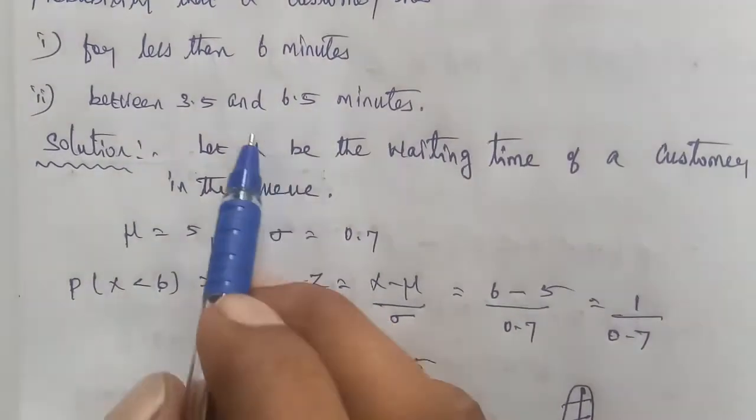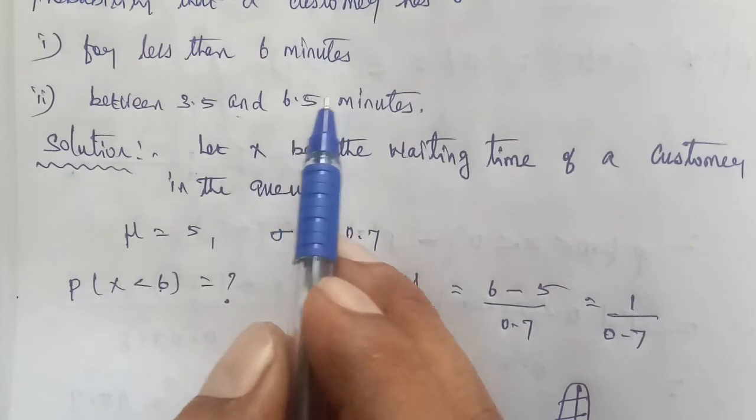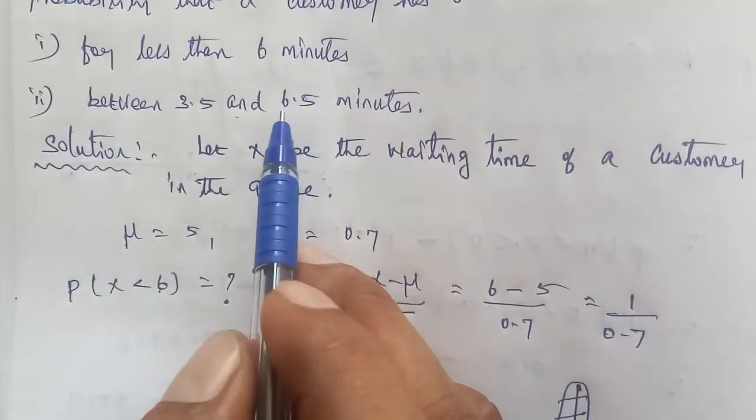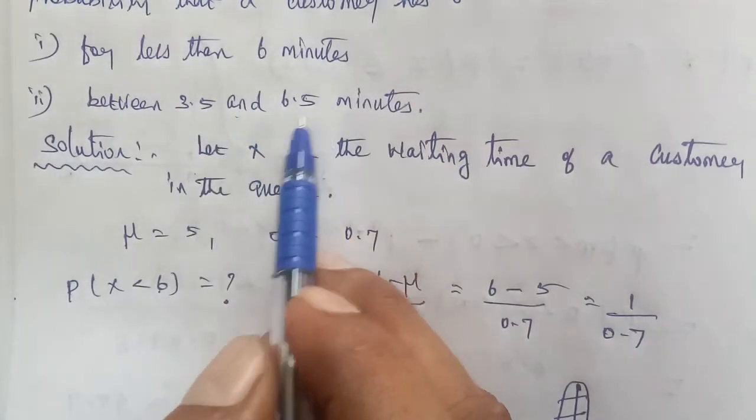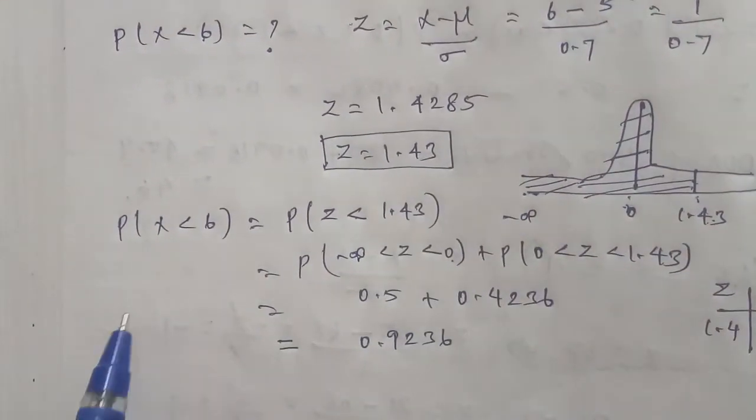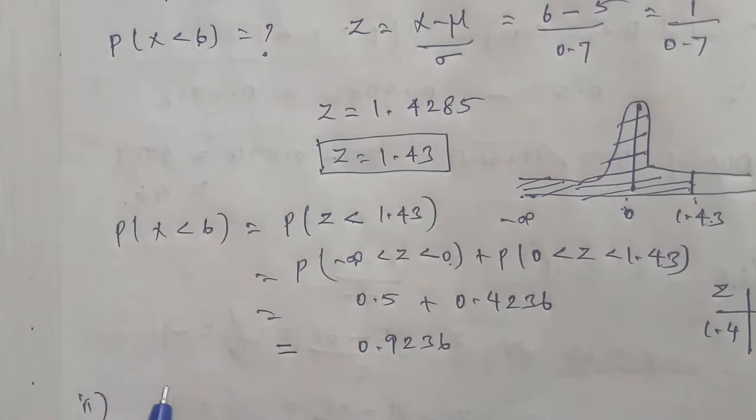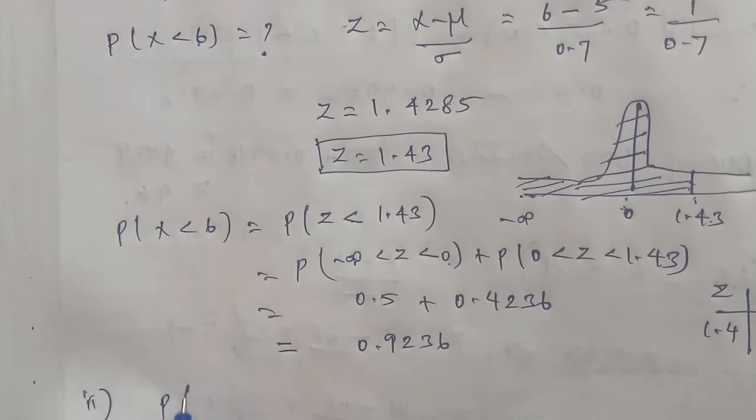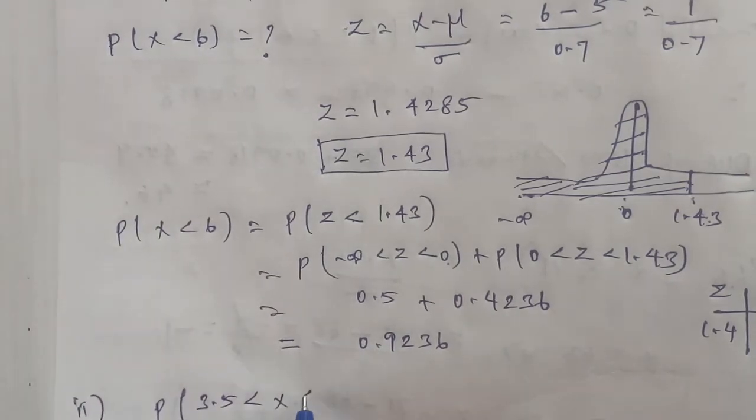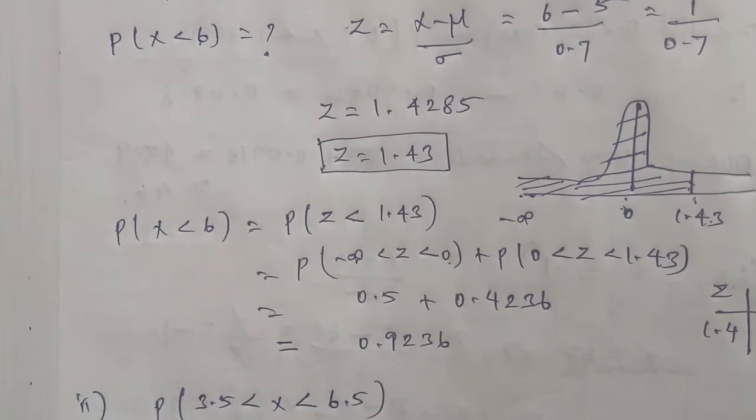For submission two, between 3.5 and 6.5 minutes, we need P(3.5 < X < 6.5).